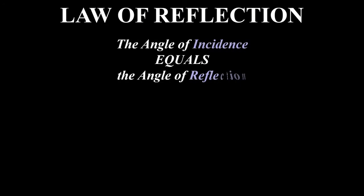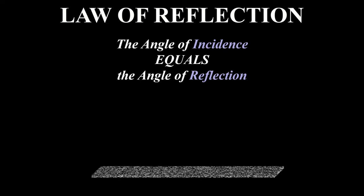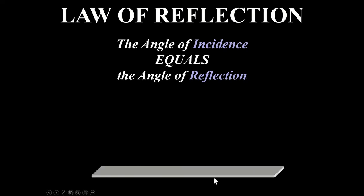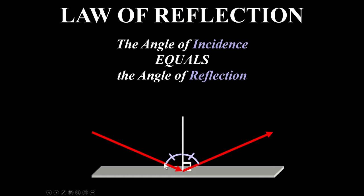It's all based upon the law of reflection, and the law of reflection is pretty straightforward. It just says the angle of incidence equals the angle of reflection. So if this is a surface and something is coming into it, the angle that it comes in will equal the angle that it goes out. We are going to measure that angle to the normal, because when we have curved surfaces, it'll make our lives a lot easier.